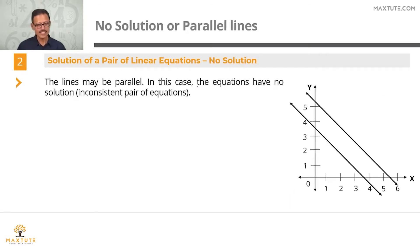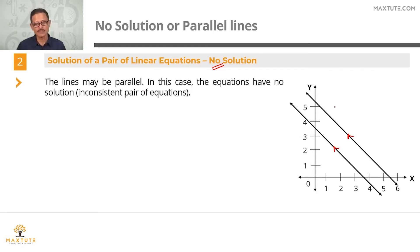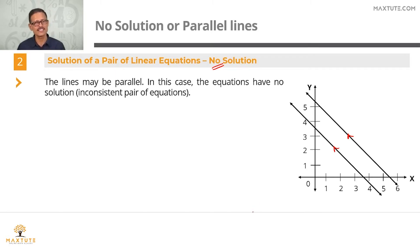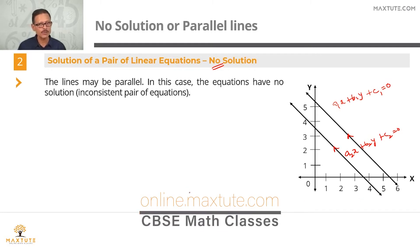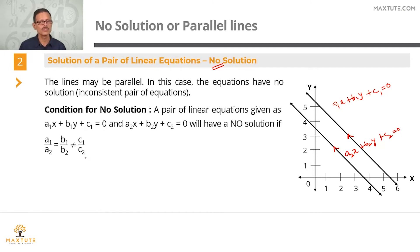The second case is where there is no solution. Parallel lines never meet, so if a pair of lines is parallel they have no common point, and therefore no common solution — which is why it is called inconsistent. For the equations a1x plus b1y plus c1 equals 0 and a2x plus b2y plus c2 equals 0, the condition for no solution is: a1 by a2 equals b1 by b2, and that should not equal c1 by c2.